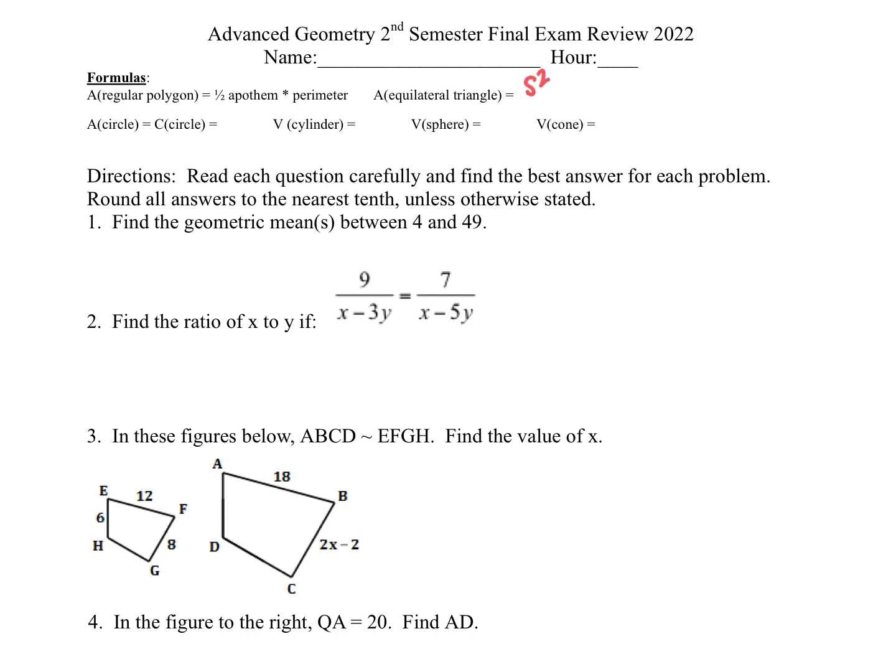This one is S squared radical 3 over 4. Area of a circle is pi R squared. Circumference is 2 pi R. Volume of a cylinder is pi R squared H. Volume of a sphere is 4 thirds pi R cubed. And the volume of a cone is 1 third pi R squared H.